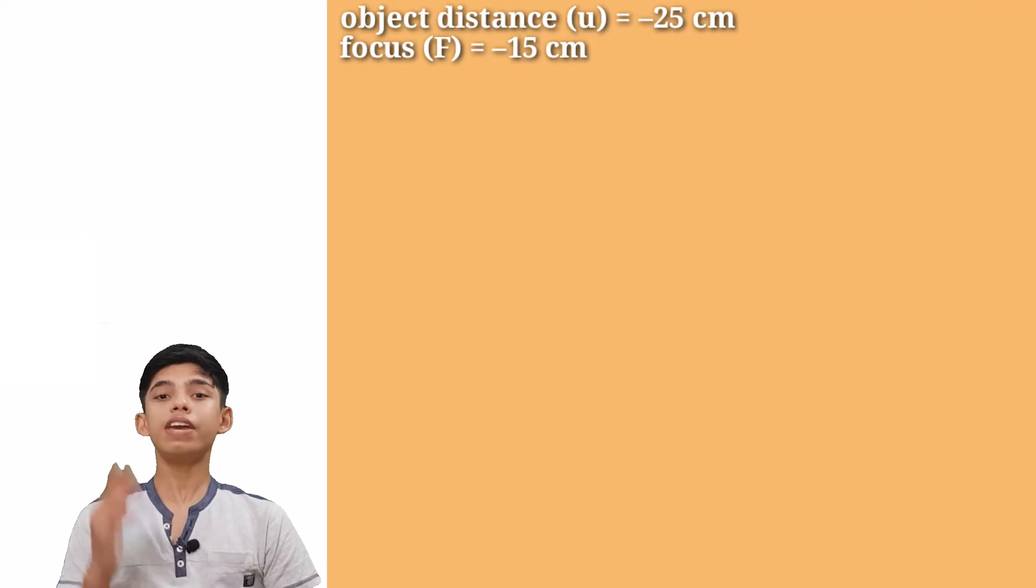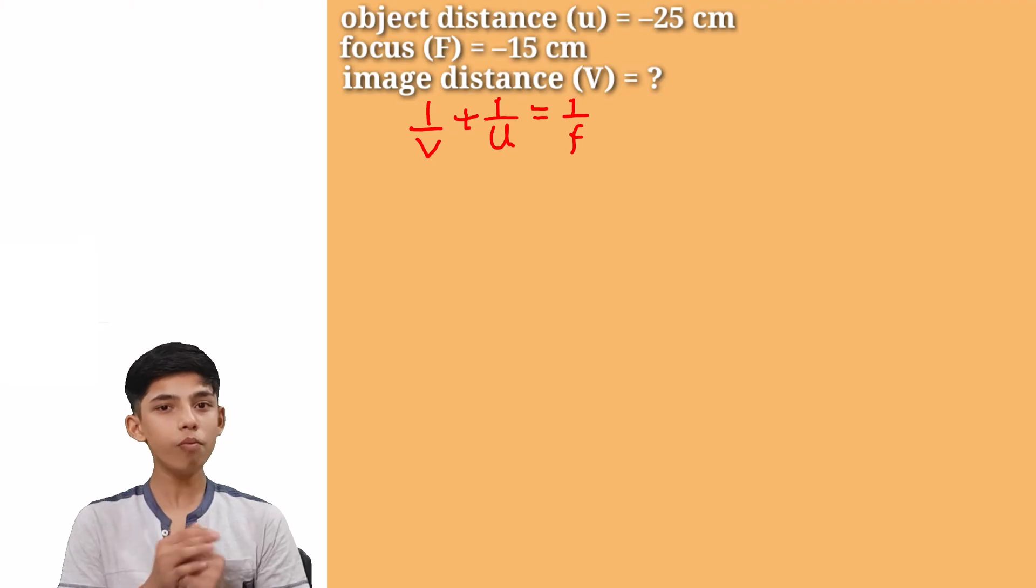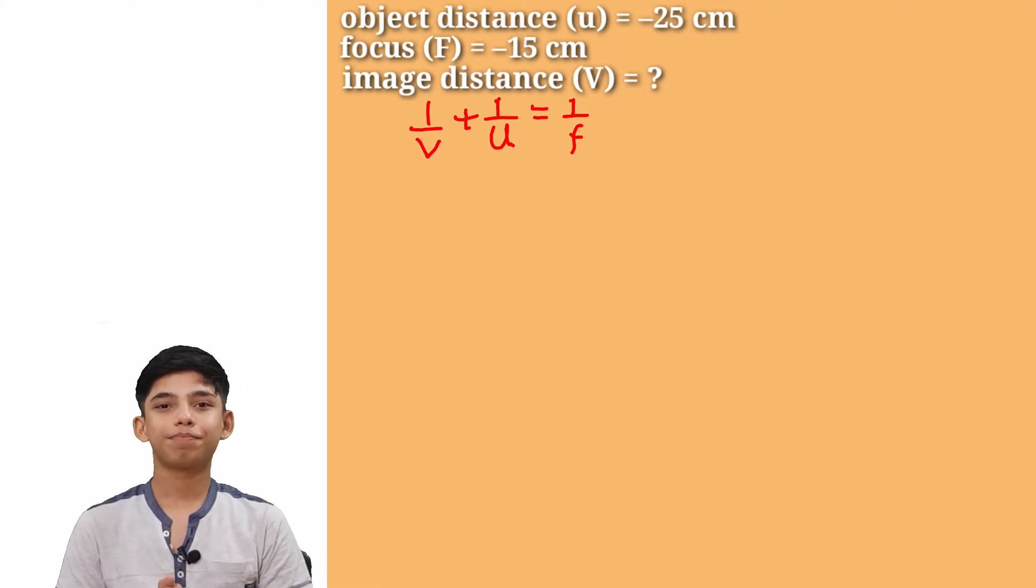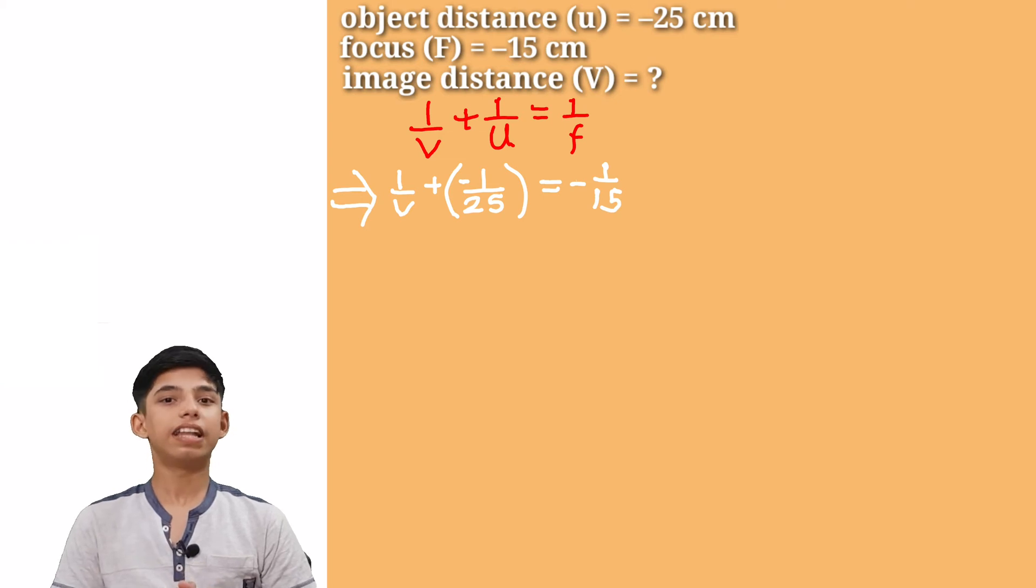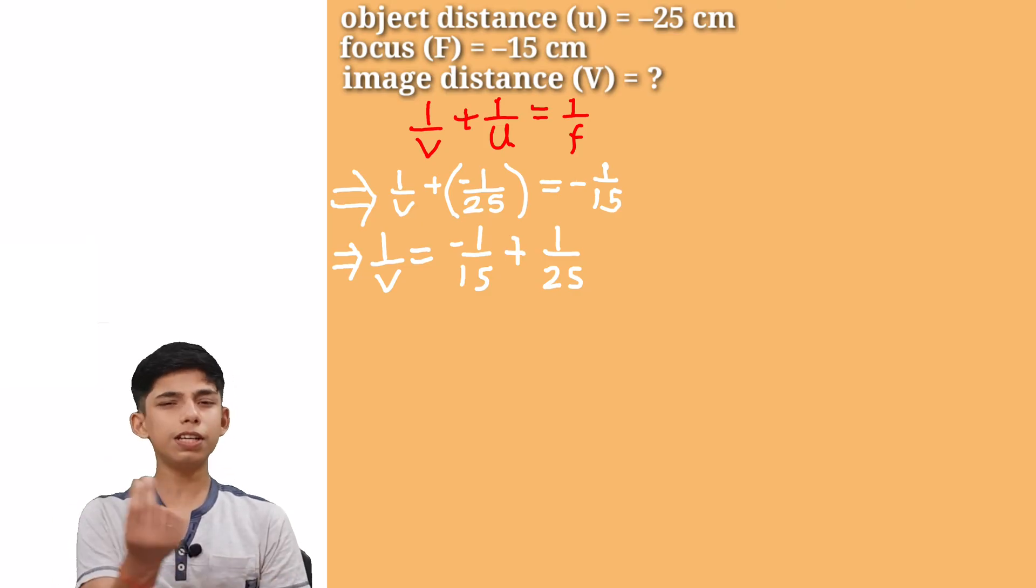Right now we have u, we have f. Now we have to calculate v and how we are going to do this? Yes, we have a very special tool mirror formula. 1 by v plus 1 by u gives us 1 by f. Now let's just replace our value and get our answer. We have 1 by v plus then minus 1 by 25 and it is equals to minus 1 by 15. Now let's take the minus 1 by 25 on the other side. It will become positive and now we have to just do simple calculation.